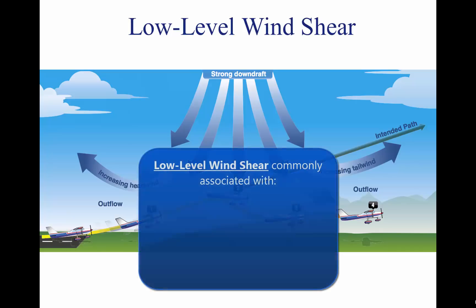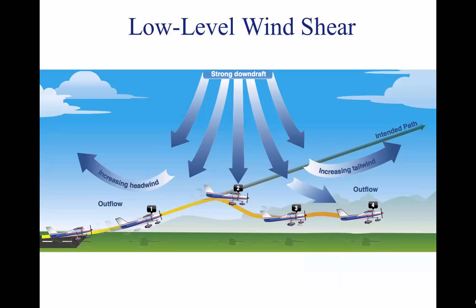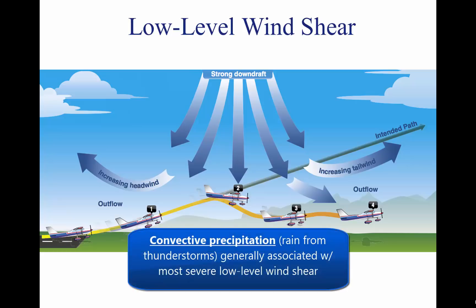Low-level windshear is commonly associated with passing frontal systems, thunderstorms, and temperature inversions with strong upper-level winds greater than 25 knots. In general, the most severe type of low-level windshear is associated with convective precipitation or rain from thunderstorms.